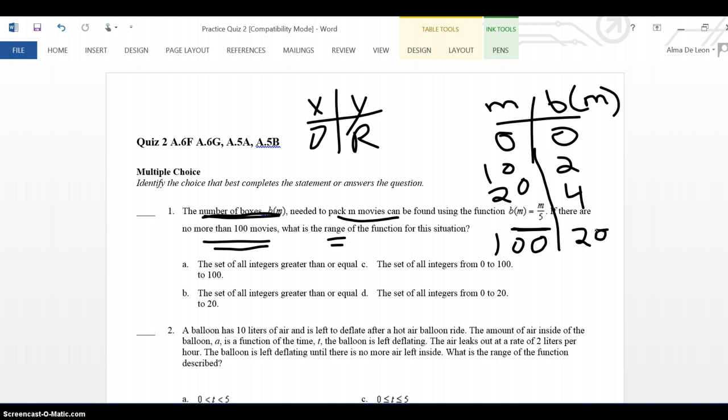So, what is my range? Well, the smallest amount of boxes that I could possibly need is 0. That's if I don't have any movies. But the largest amount of boxes that I could possibly need is 20. Remember, BM is the number of boxes that's our range. So, my answer should be the set of all integers from 0 to 20.